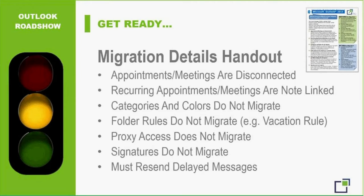The next issue is that recurring appointments and meetings are not linked after migration. If you had recurring appointments in GroupWise, after migration they will be in your Outlook calendar as individual appointments rather than a linked series. So if you wanted to make a mass change, you'd have to individually change every single one. What I'd recommend is canceling those recurring appointments prior to your migration date, then after migration resend them as recurring in Outlook - where they'll work perfectly.